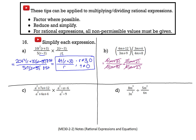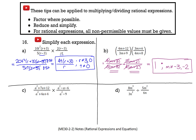Everything cancels out, which means we're dividing something by the exact same thing — so our answer is 1, not 0. We still need to state non-permissible values from before the cancellation. From (m plus 3) in the denominator, m cannot equal negative 3. And from (m plus 2) in the second denominator, m cannot equal negative 2.